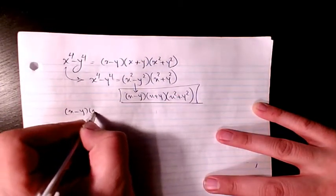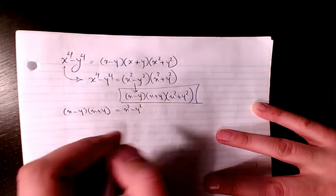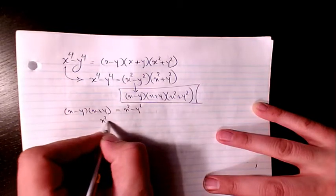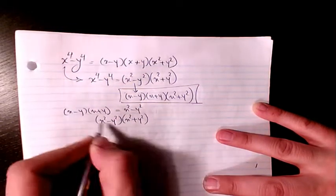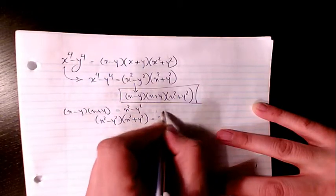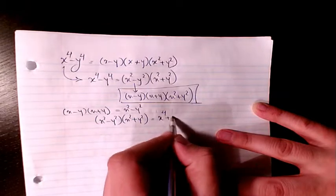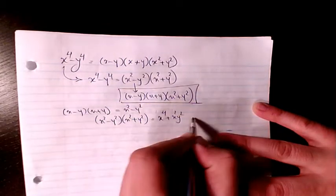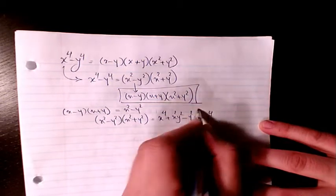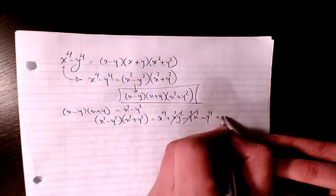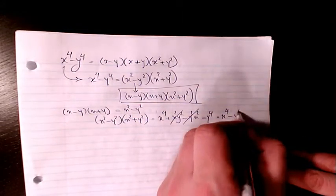Verifying from right to left: x minus y times x plus y gives x squared minus y squared. Then x squared minus y squared times x squared plus y squared expands to x to the power of 4 minus x squared y squared plus x squared y squared minus y to the power of 4. The middle terms cancel, leaving x to the power of 4 minus y to the power of 4.